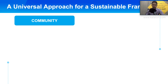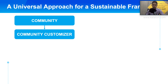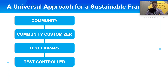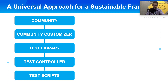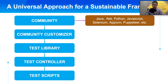Firstly, we have a community layer. Then we have a layer called the community customizer. Then the test library layer, the test controller, and finally the test script. For the community layer, this is where you need to pick the strong open source community that you can rely on later. It can be the community of programming languages such as Java, .NET, Python, or JavaScript, or the community of the core execution engine like Selenium, Appium, and Puppeteer.